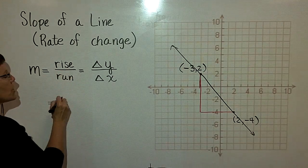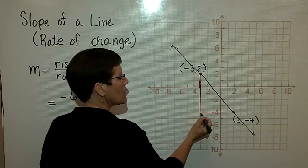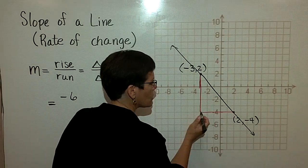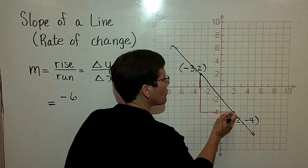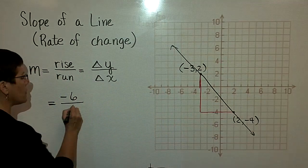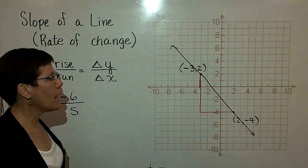So in the rise direction, I've gone down 6. And then in the run direction, the horizontal direction, in the X direction, the change in X, I've gone 1, 2, 3, 4, 5, a positive 5 units. The slope of this line is a negative 6 over a positive 5.